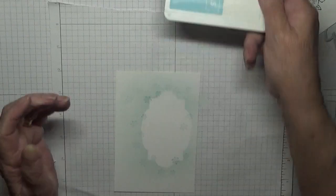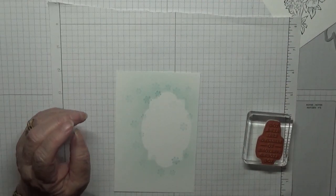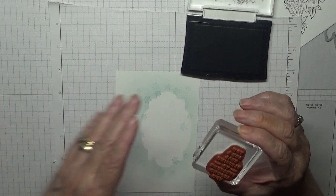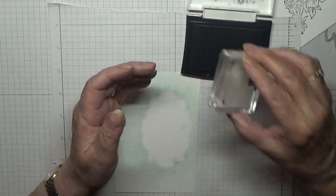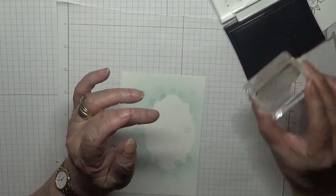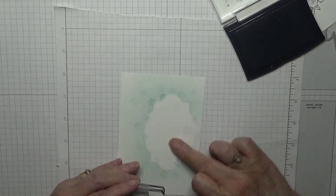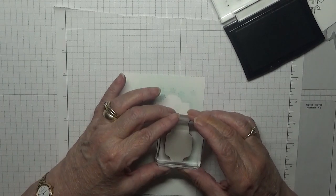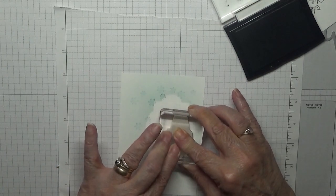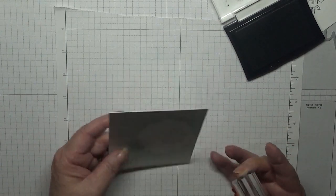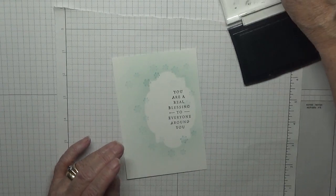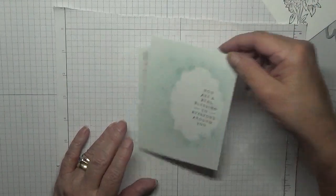Now we're going to get our Versafine and the sentiment, "you are a real blessing to everyone around you." This is where we got to hope we get it straight and we're going to stamp it this side of the right side of the sentiment. And we'll put that to one side to dry.